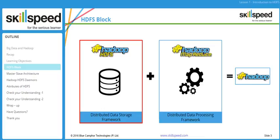Think about HDFS very similar to any other file system that you know. For example, if you are working on a Windows platform you will have a file system such as NTFS, and in the Linux platform we have file systems such as ext2. Just the same way, we have a specifically designed file system for Hadoop which is called HDFS. However, HDFS is quite different from the traditional file system in that it is designed to leverage the distributed power of computing. Other file systems such as NTFS and FAT usually work on a single machine, whereas HDFS works in a cluster.